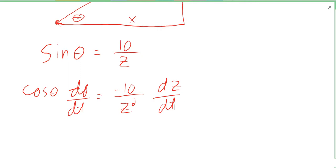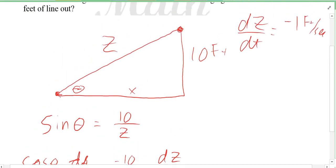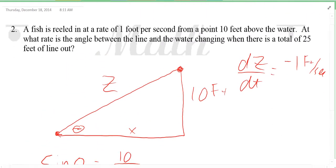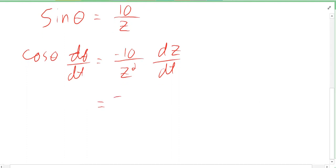All I gotta do is plug in everything we know. From the problem, they tell us there's a total of 25 feet of line out, so that's Z. So it's negative 10 over 25 squared. We also know dZ/dt is negative 1.